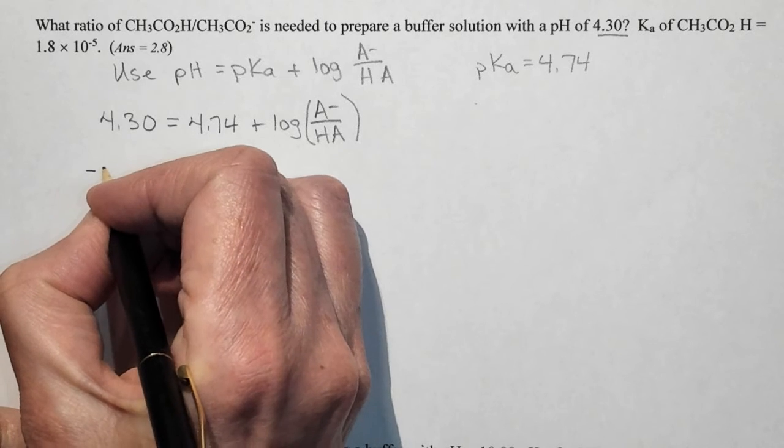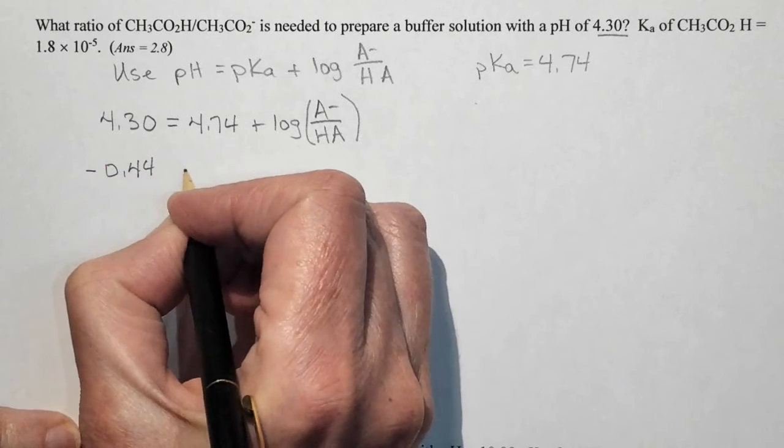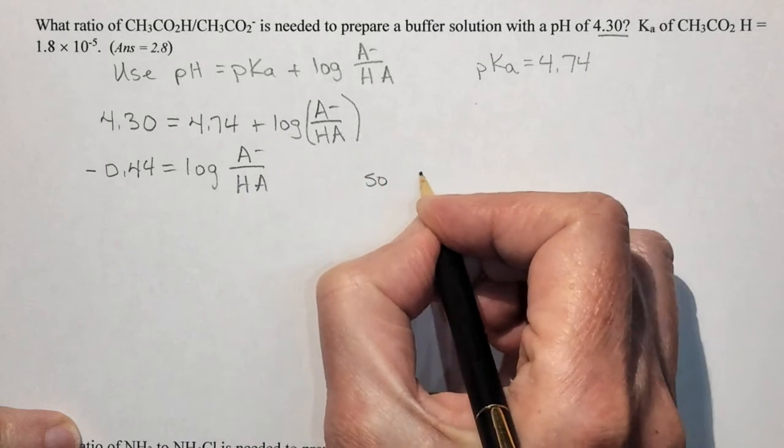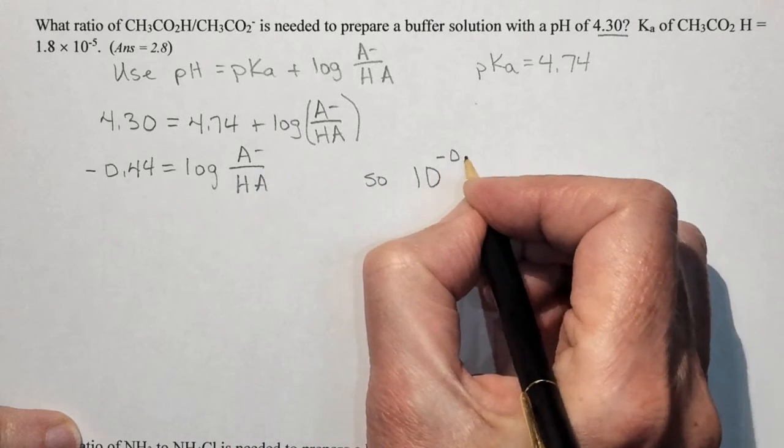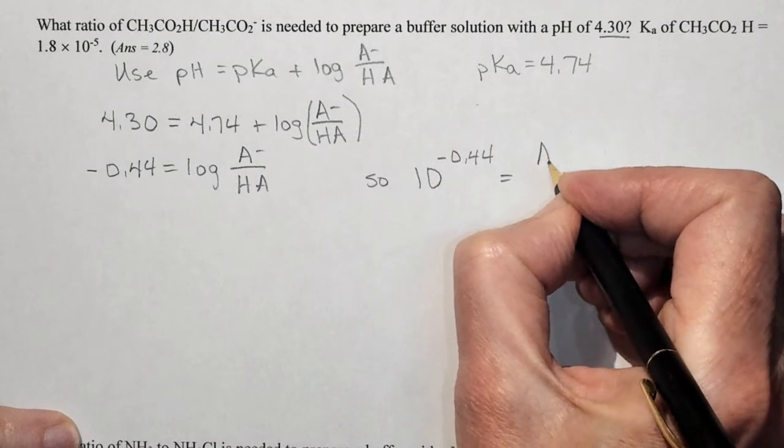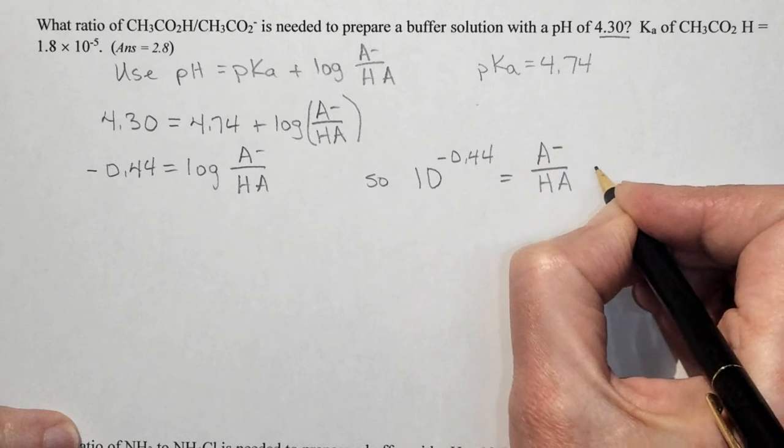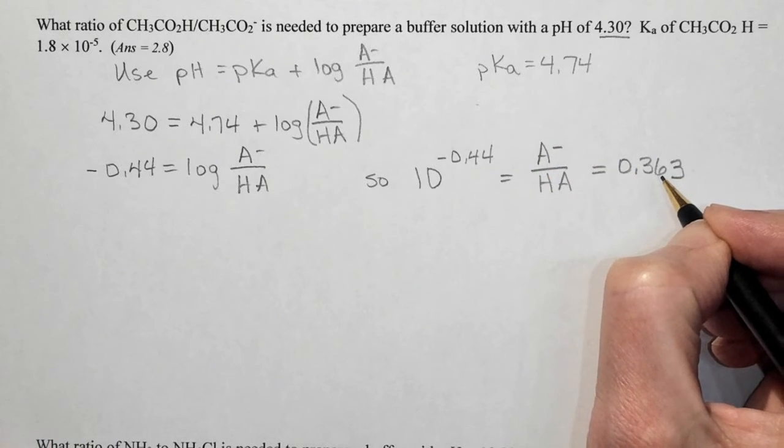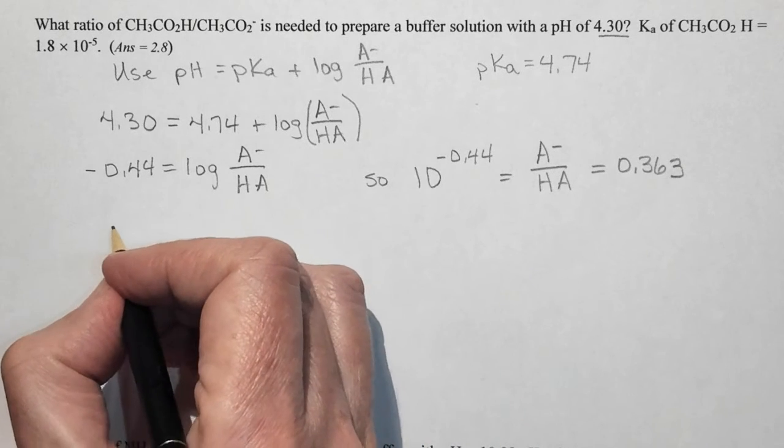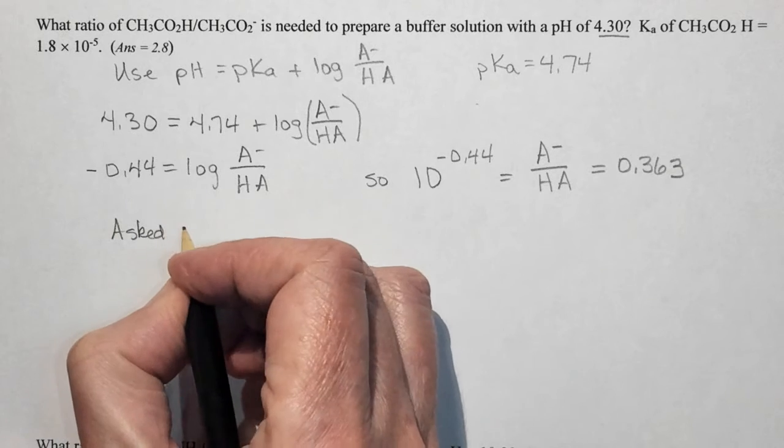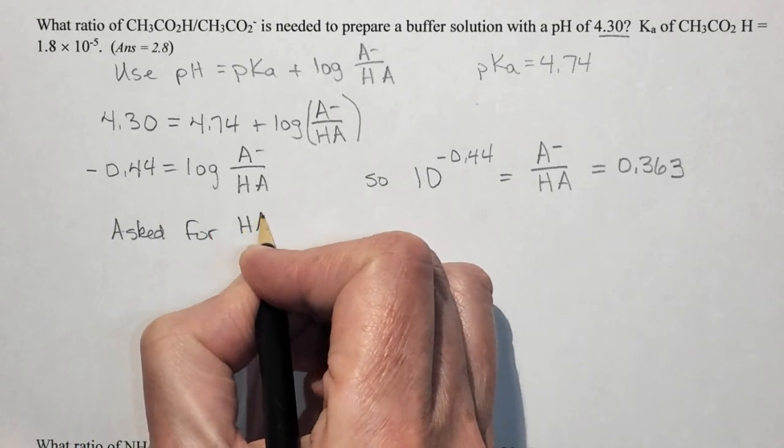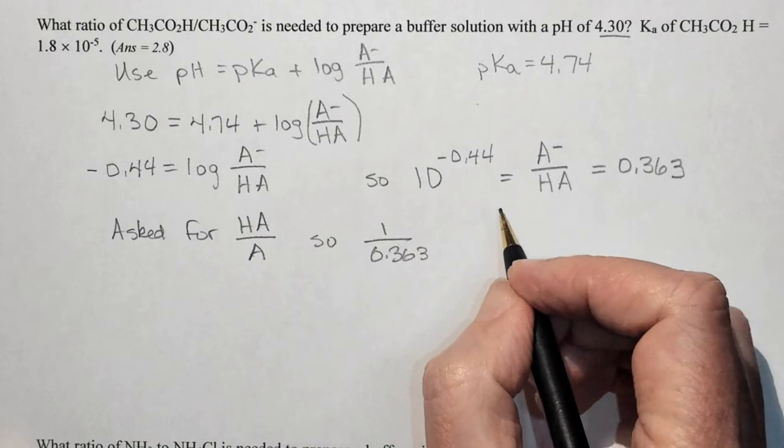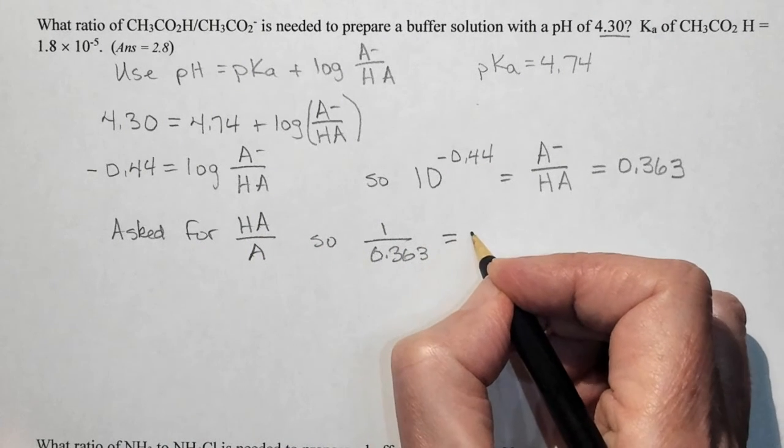Doing a little bit of algebra. Negative 0.44 is equal to log A minus over HA. So 10 raised to the negative 0.44 is going to be equal to our ratio of A minus over HA. And this is equal to 0.363. So that's our ratio of A minus to HA. Now the question was tricky and it asked for the reverse ratio. It asked for HA over A minus. So I just took the inverse of 1 over 0.363. And doing my sig figs, that was equal to 2.8.